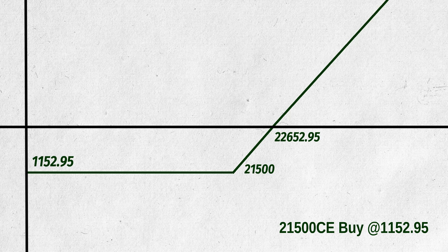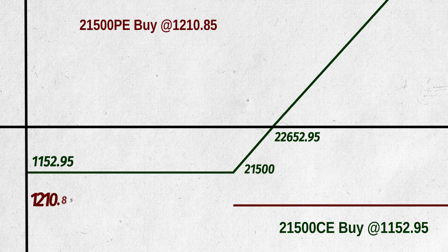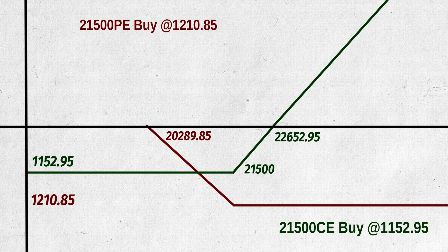Now let us draw one more payoff diagram for 21,500 put option bought at 1,210.15. If price closes above 21,500, whole premium is loss 25 times per lot, and the breakeven is 20,289.85, which is strike price minus premium. If price falls more than this, then we will get profit 25 times with each point. Now let us see the combined payoff diagram of both these trades.